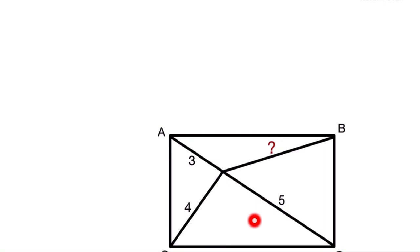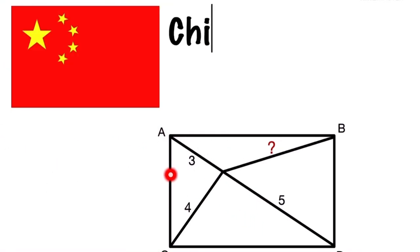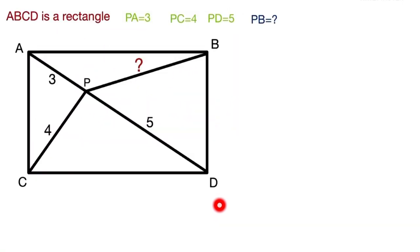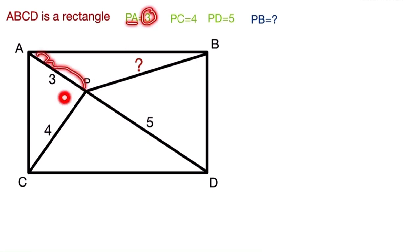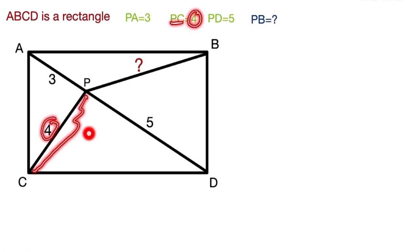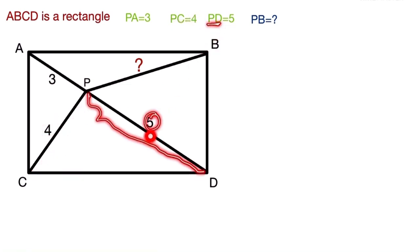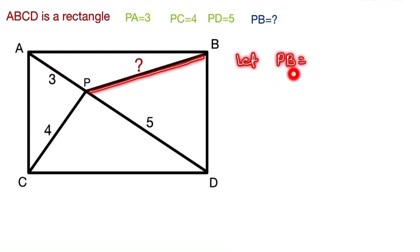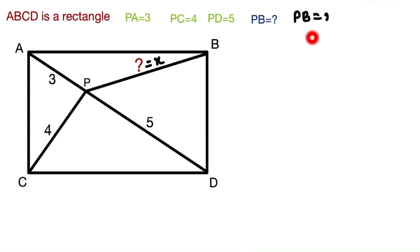Welcome back. Today we are going to solve a question taken from the China Junior Maths Olympiad. ABCD is a rectangle. The length of PA is 3, PC is equal to 4, and PD is equal to 5. We have to find the value of PB. Let PB equal x, so we have to find the value of x.